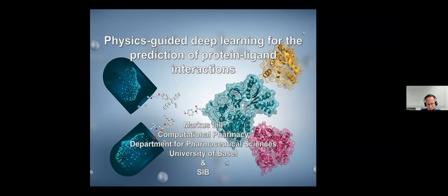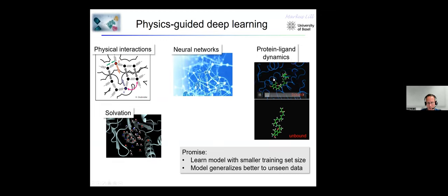However, our domain has quite some issues if you compare it to image recognition or to large language models. The issue is that we have a much smaller set of data, usually in the amount of hundreds or thousands of data points. That's why training a deep neural network model on such a small dataset is quite challenging. Our effort is to incorporate as much as possible of physical-chemical knowledge into deep neural networks — to combine the best of two worlds: the knowledge gathered over the last decades on physics, chemistry, and biology, with learning from existing data. The hope is that we can learn models using a much smaller training set size and generate models which generalize much better to unseen data.